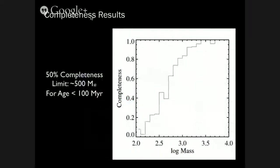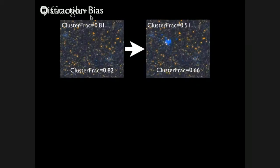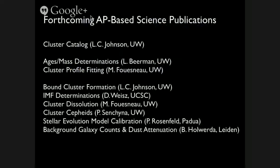For any of the limits we apply, we can go back through using the synthetic clusters and say what our mass completeness is. For the Andromeda Project, we have 50% mass completeness at about 500 solar masses for clusters less than 100 million years old — we're doing really well. We have just crossed the threshold with our final catalog in hand. The cluster catalog is expected to be submitted in the next couple of months, following which there is a whole host of cluster projects we've been ready to pursue from both the Andromeda Project team and the PHAT team at large, including age and mass determinations for the cluster system within M31 and cluster profile fitting.